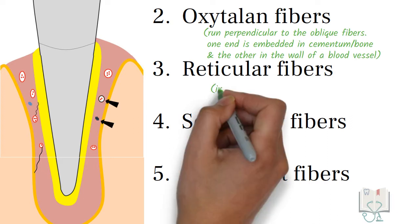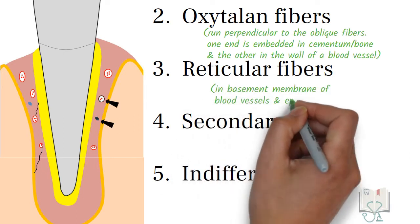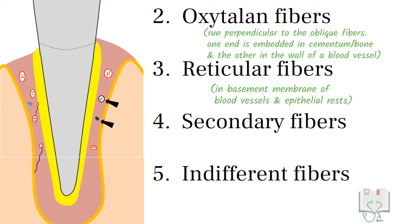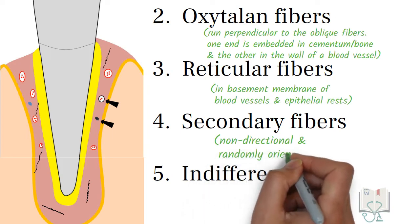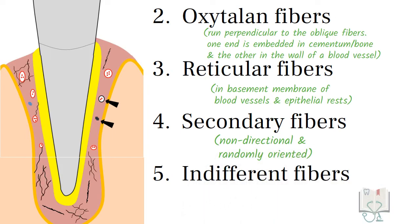Reticular fibers are related to the base membrane of blood vessels and epithelial rests. Secondary fibers are relatively non-directional and randomly oriented. Indifferent fibers form a plexus of fibers.